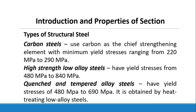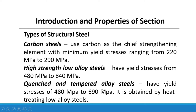Types of Structural Steel: Carbon steels use carbon as the chief strengthening element with minimum yield stresses ranging from 220 MPa to 290 MPa. High-strength low-alloy steels have yield stresses from 480 MPa to 840 MPa. Quenched and tempered alloy steels have yield stresses of 480 MPa to 600 MPa, obtained by heat-treating low-alloy steels.